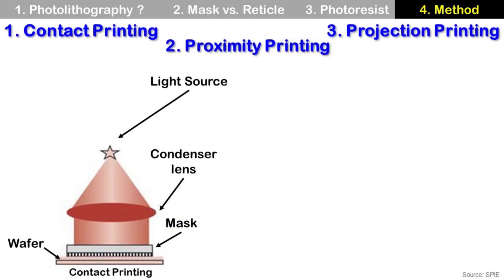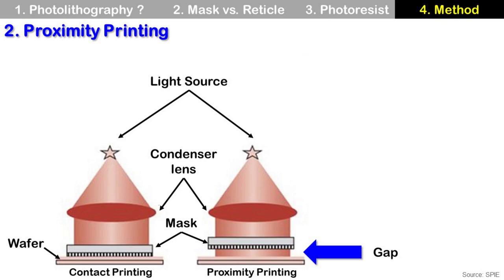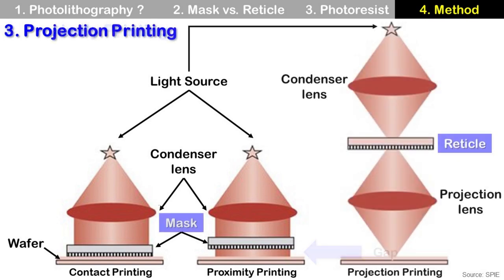There are three methods for photolithography: contact printing, proximity printing, and projection printing. For contact printing, the mask contacts the wafer and the whole mask pattern is transferred. For proximity printing, it is very similar to contact printing, but there is a gap between the mask and wafer of 2 to 20 micrometers. For projection printing, it uses a reticle instead of a mask and patterns only a small part of the wafer at one time.